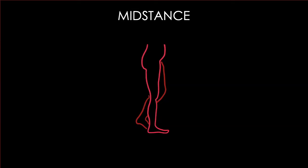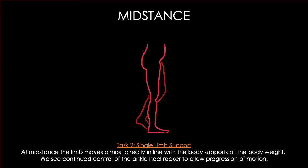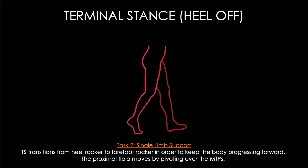Mid stance follows loading response and we are transitioning to our second task. One limb is now going to support our entire body weight, and we're almost directly in line with our body over our foot. As we transition to terminal stance we're still in single limb support, and this is where we transition from our heel rocker to our forefoot rocker — we've rolled over our heel and now start bending at the MTP joints to initiate that forefoot rocker.